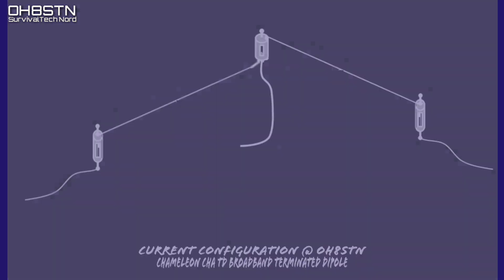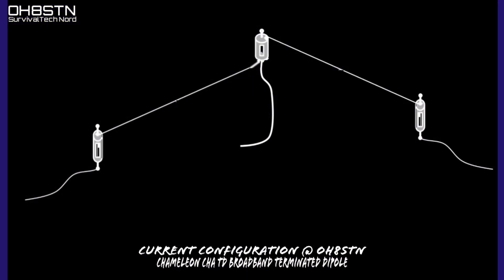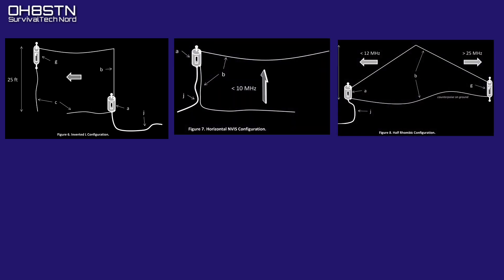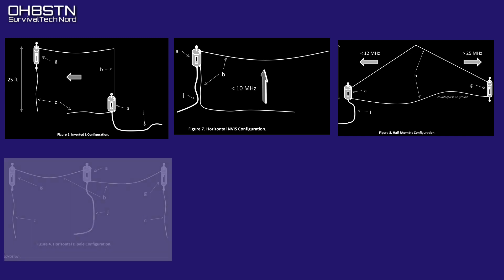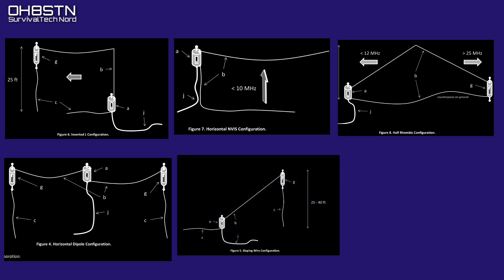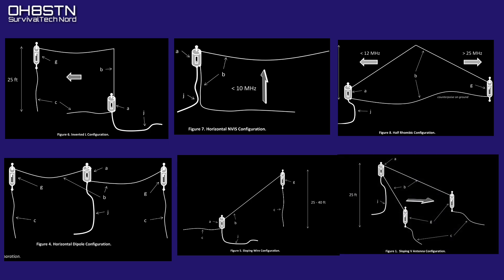Great documentation is a hallmark of Chameleon Antenna, and this antenna is no exception. Right now I'm using the CHATD in an inverted-V configuration with the apex at 12 meters. The user manual also covers an inverted-L configuration, an INVIS configuration, a half-rhombic configuration, a horizontal dipole, a very directional sloping configuration, and a sloping-V configuration.